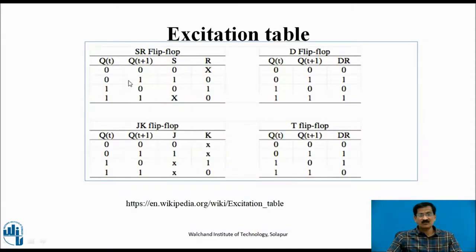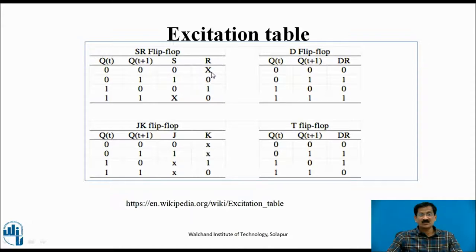This is the excitation table for the SR flip-flop. The first column is the present state and the second column is the next state Q+1. For a transition from 0 to 0, the required SR inputs are 0 and X (don't care). For 0 to 1, inputs are 1,0; for 1 to 0, inputs are 0,1; for 1 to 1, inputs are X,0. Similarly, the table also shows excitation inputs for JK and T flip-flops.